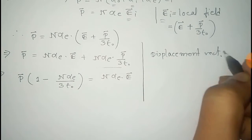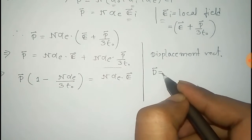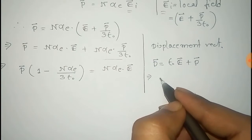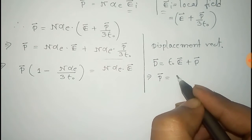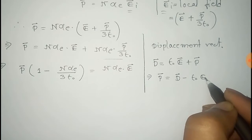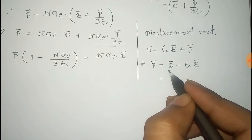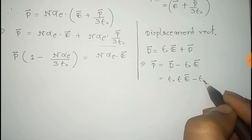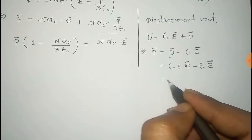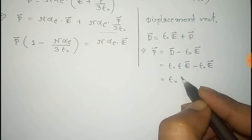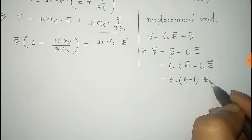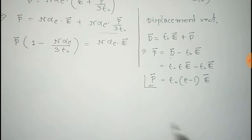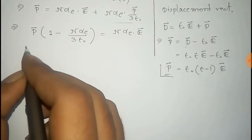We know that the displacement vector in electrostatics is given by D equals ε₀·E plus polarization P. From this, P equals D minus ε₀·E. And D equals ε₀·ε·E, so P equals ε₀·ε·E minus ε₀·E, which gives P equals ε₀·(ε − 1)·E.